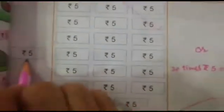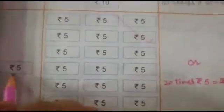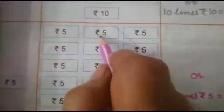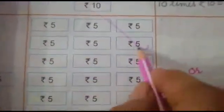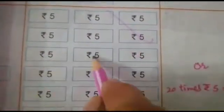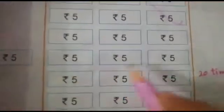Now, which note is this? 5 rupees. Then how many notes are there? 1, 2, 3, 4, 5, 6, 7, 8, 9, 10.